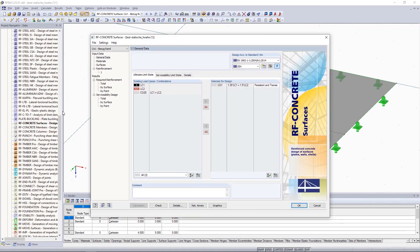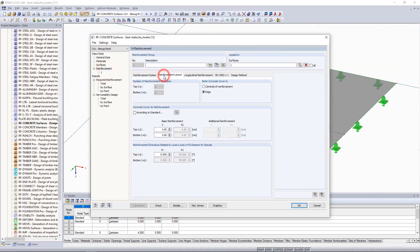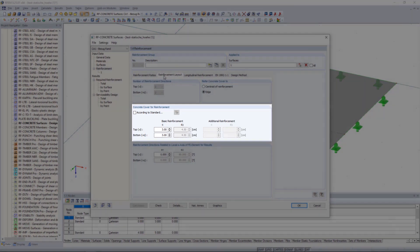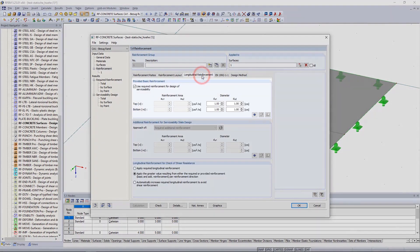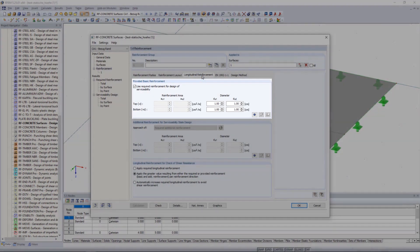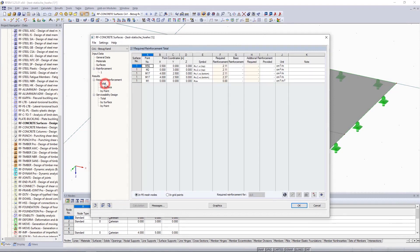With the help of the add-on module RF Concrete Surfaces, you can enter the specifications of the reinforcement as desired and the software automatically considers the resulting effective depth during the design.